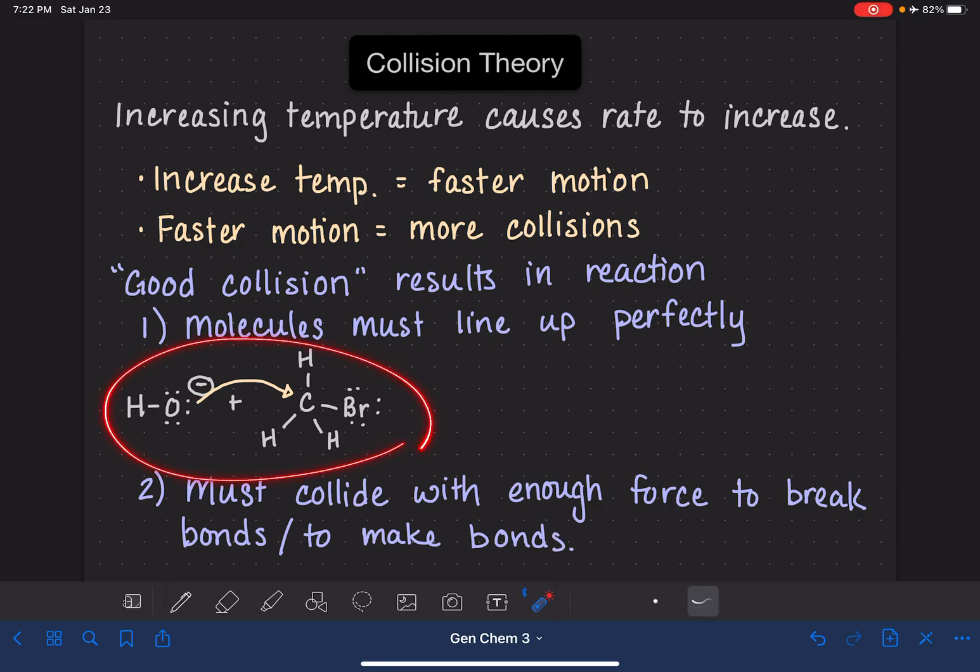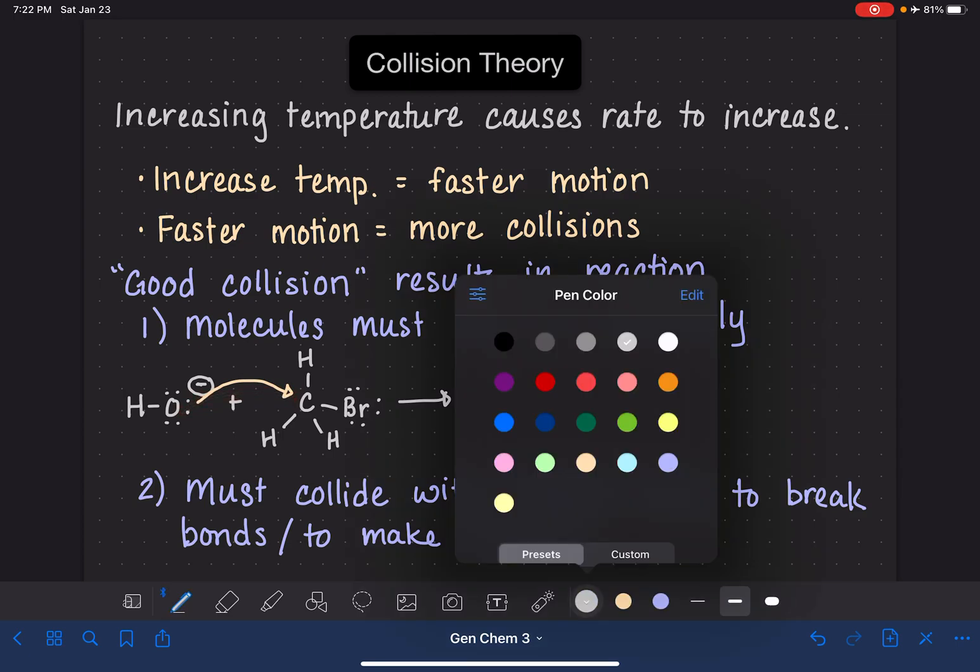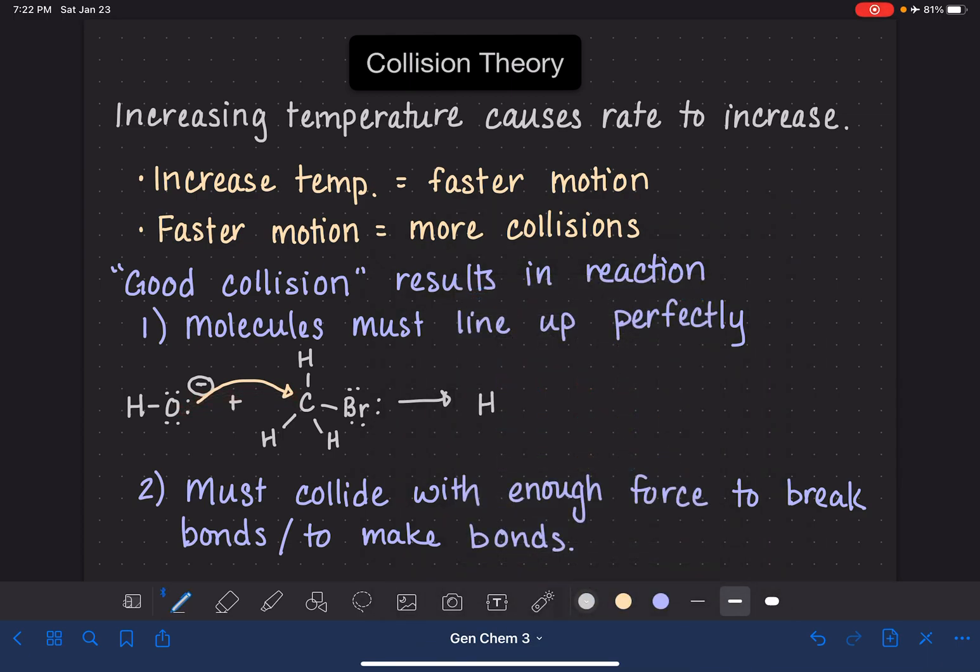In this same reaction example here, when the molecules come together, they have to initially collide with enough force to create this bond between the carbon and the oxygen atom. Now they also have to collide with enough force to break the carbon-bromine bond, because that's part of this reaction as well. Although the carbon-bromine bond doesn't break immediately in this particular reaction, so for a very small amount of time, for a very small fraction of a second, the oxygen atom forms its bond to the carbon, the bromine is still attached.